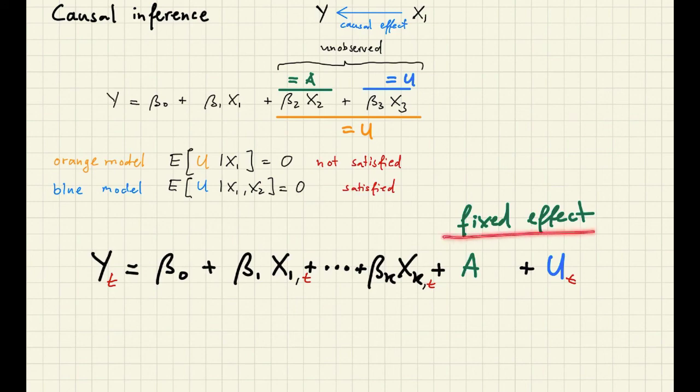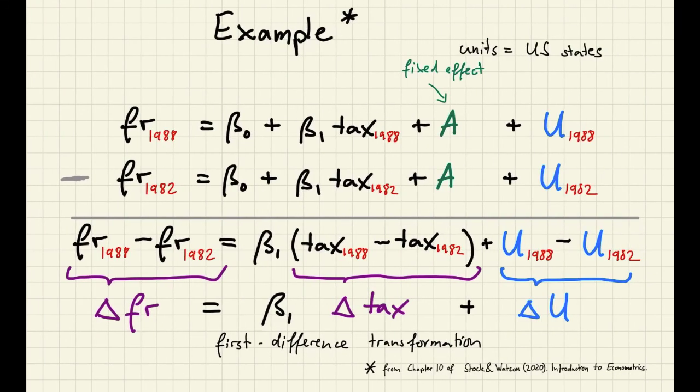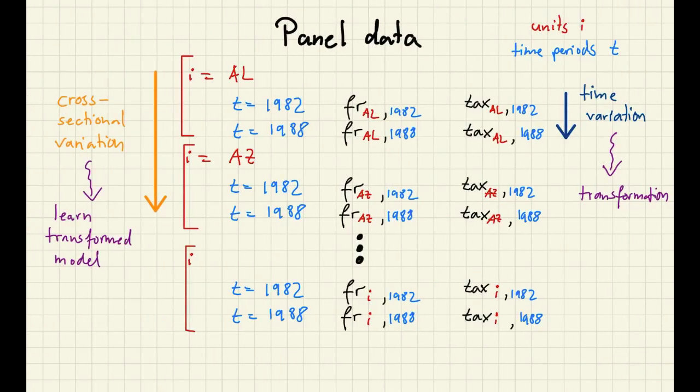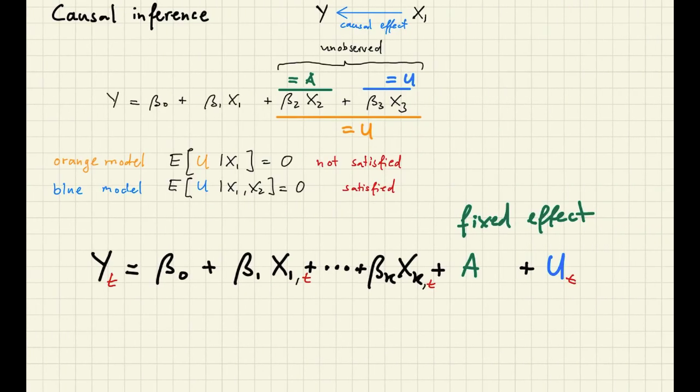Without the fixed effect assumption, the first difference transformation does not eliminate A. So in summary, to apply fixed effect panel methods, we need both a special kind of data and we have to study an economic environment where the fixed effect assumption is plausible.